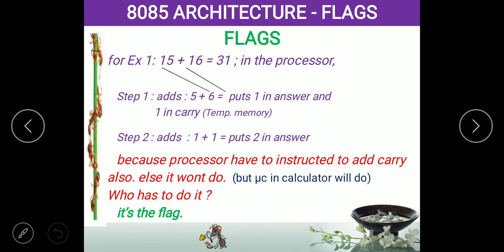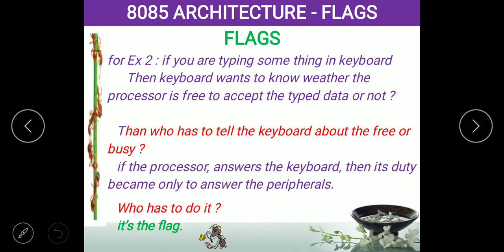The carry value is not automatically known to the processor when it performs the next operation, because the processor just adds two numbers and gives the result. If the processor had to check every time whether there is a carry or not, the processing cycle time would increase and thereby the speed would reduce. So the processor does not check whether there is a carry — instead, the processor checks the flag register. That is why we use the flag.